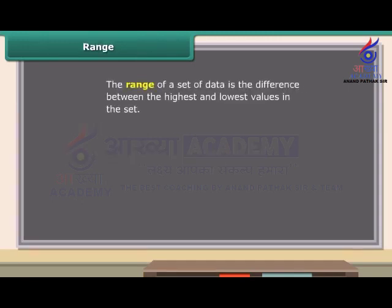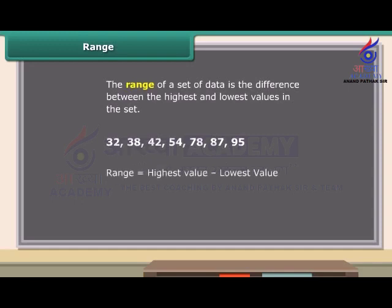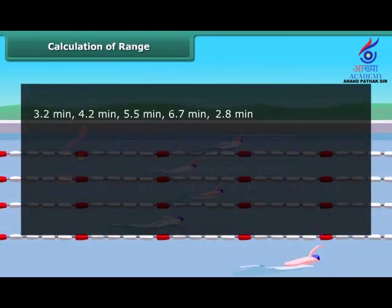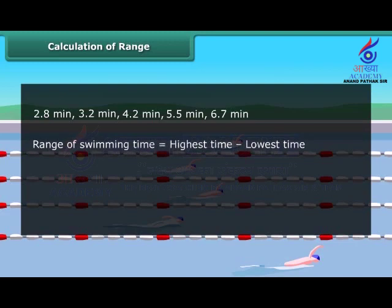The range of a set of data is the difference between the highest and lowest values in the set. To find the range, first order the data from least to greatest, then subtract the smallest value from the largest value in the set. So children, now you can also find the range of any set of data. Five participants completed their swimming race. Can we calculate the range of swimming time from this data? Yes, it's simple. First, order the data from least to greatest. Now subtract the least value of time from the highest. So the range of swimming time is 3.9 minutes.